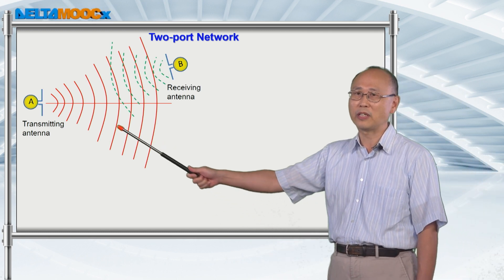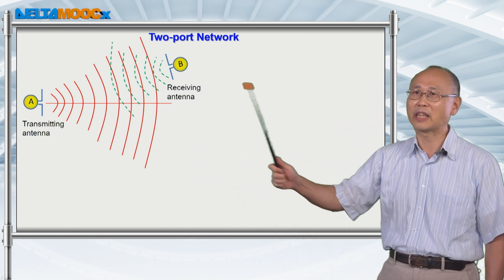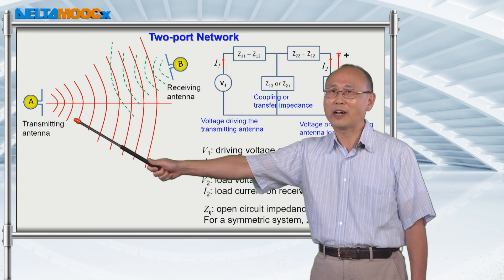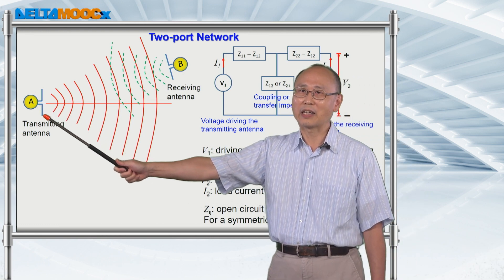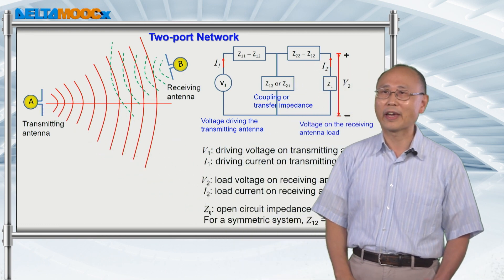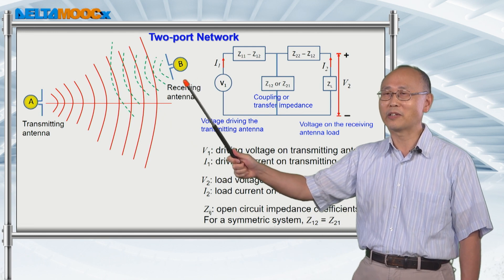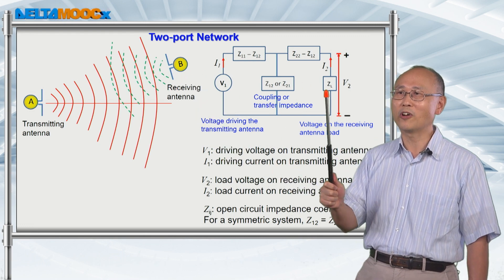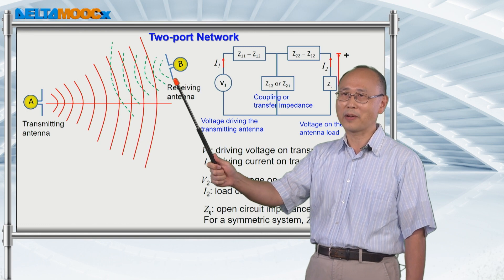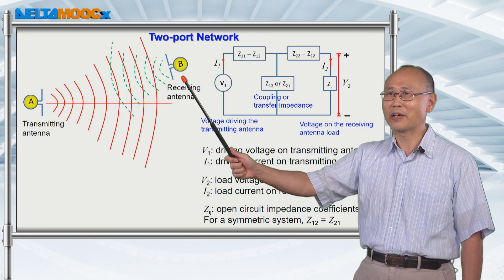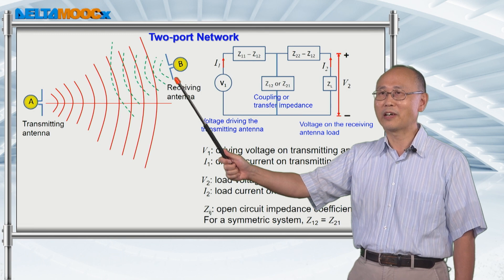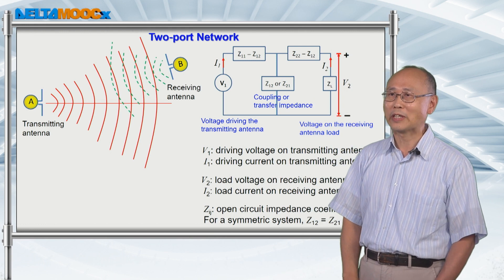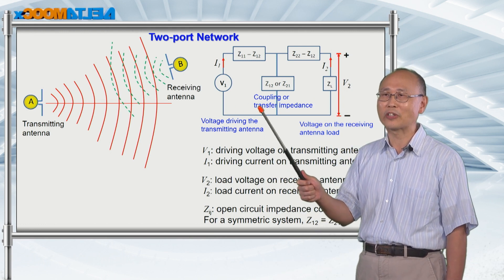So in this cartoon, you see antenna A on the left and antenna B on the right. Apparently, they are talking to each other. If you have a voltage on antenna A, you will be transmitting some signal from A into space, and then this signal can reach antenna B. As soon as antenna B receives the signal, there will be some voltage induced on the load of this antenna. And when the current oscillates on antenna B, you will also radiate some signal back to antenna A. So in general, you can construct a coupled circuit like this.